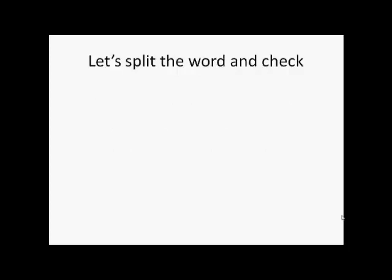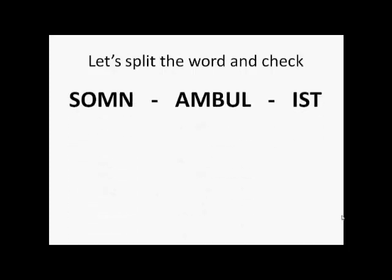Let's split the word and check whether we can understand the meaning of the individual parts. Somnambulist is split as 'somn', 'amble', and 'ist'. For the 'ist' part, if you take a look at words like cyclist, pianist, physicist — a cyclist is a person who cycles, a pianist is a person who plays the piano, and a physicist is a person related with physics. So somnambulist is a word which depicts a person.